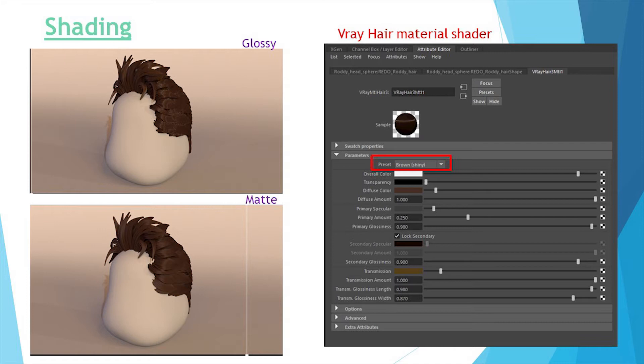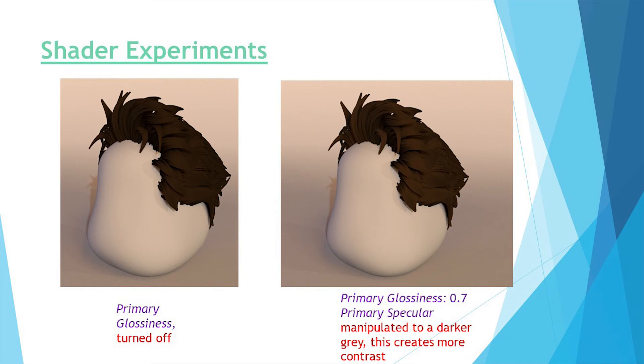Along with creating the simulation, I was manipulating the Vray hair material shader. I began with using the shiny brown preset in the shader. This was too glossy for a clay, natural look, because it reflected light too realistically. The matted brown preset suited the reference more. From this, I experimented with the glossiness, and found that the lower the glossiness value, the quicker the render. My final shader had a primary glossiness of 0.7, and I manipulated the primary specular to create more contrast between highlights and shadows.